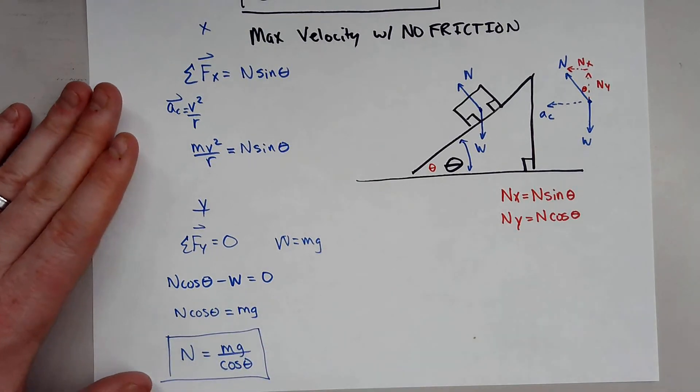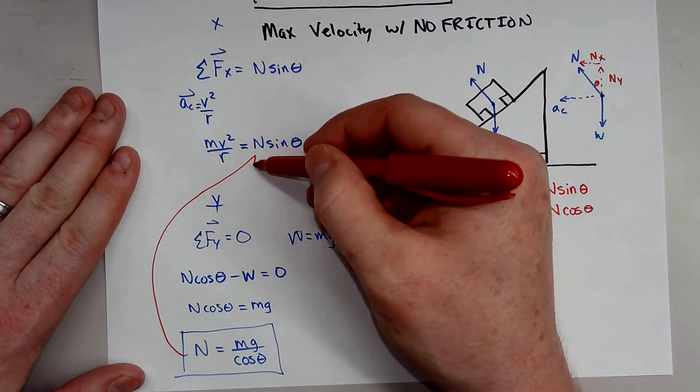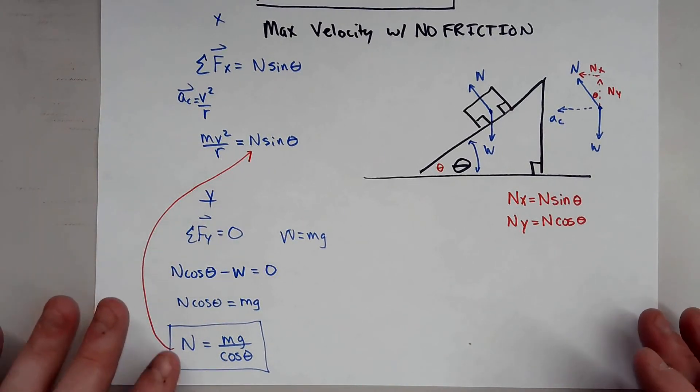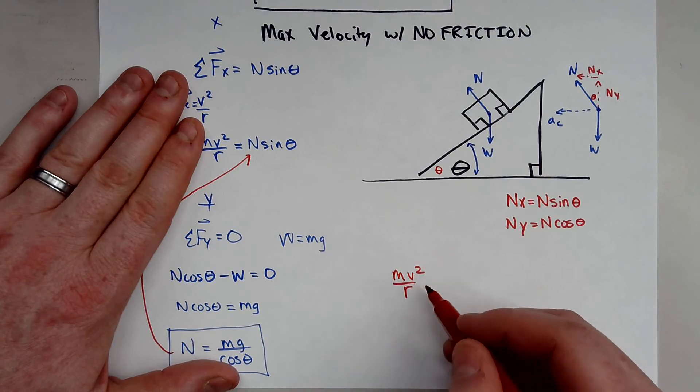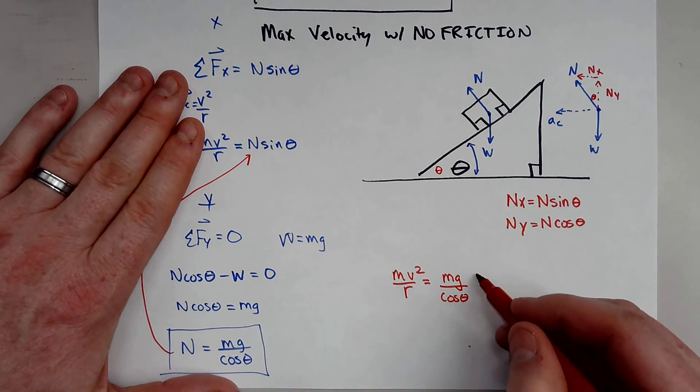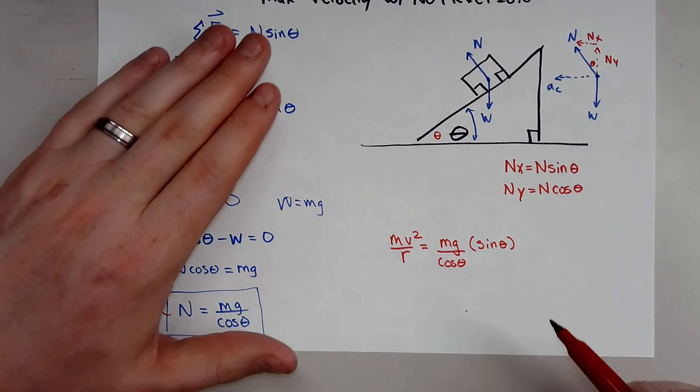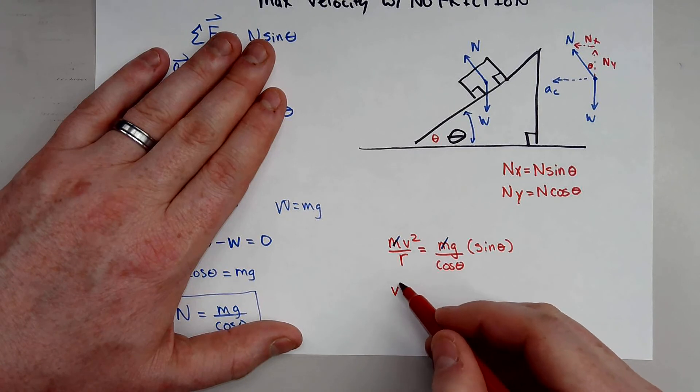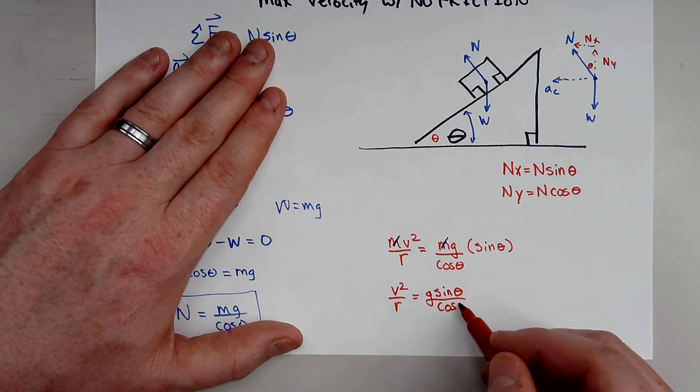So I now know what my normal force is. So now I'm going to take this normal force and I'm going to plug them together. So first you need to solve it for the x direction, which we did, and then we solve it for the y direction, which we have. And then you take this normal force and you plug it in right here. So now I have this: mv squared over r is equal to mg all over cosine theta times sine theta. And now the equation really starts to work itself out. I'm going to go ahead and see right here that these masses will cancel out. So I'm left with this: v squared over r is equal to g sine theta divided by cosine theta.